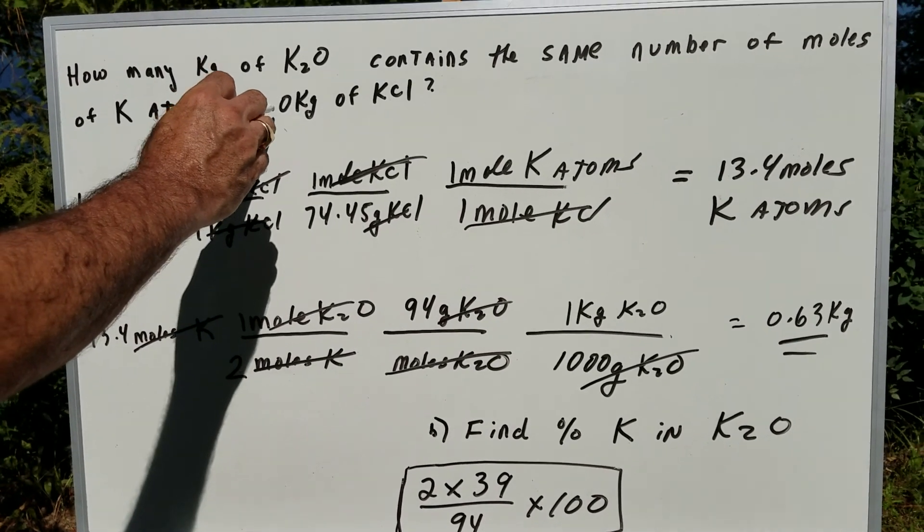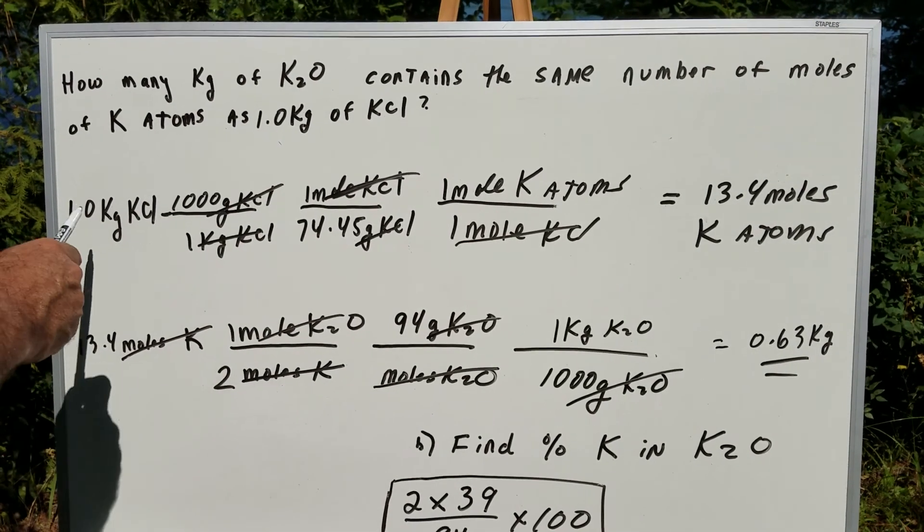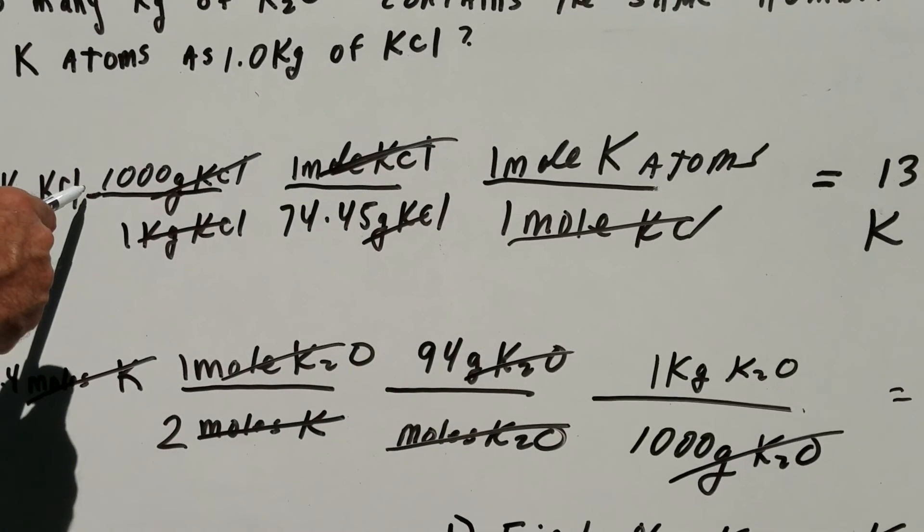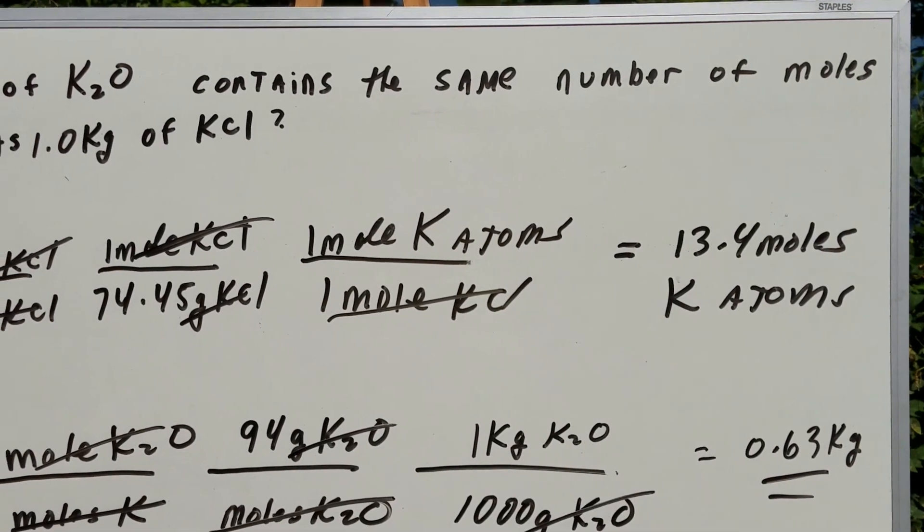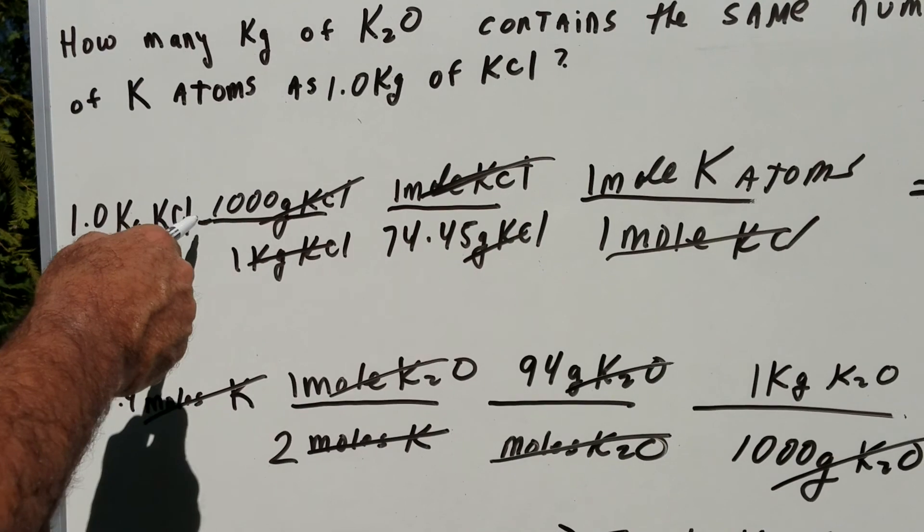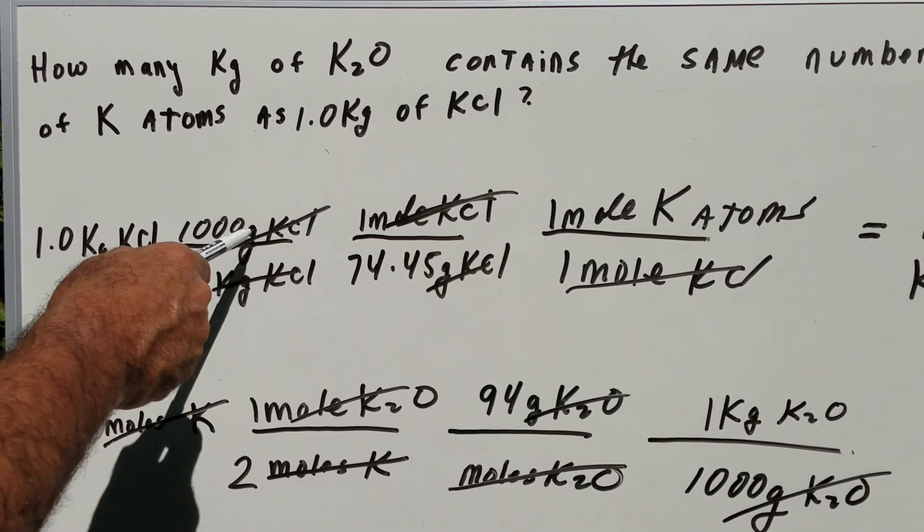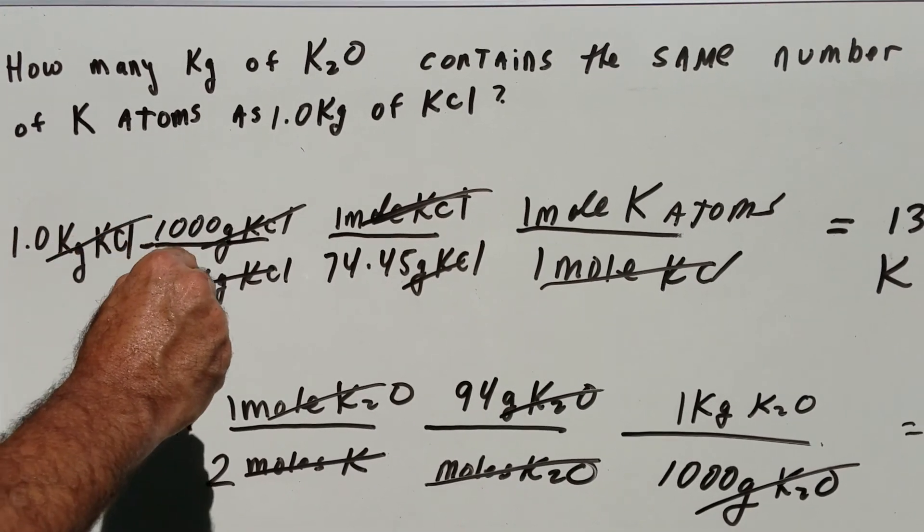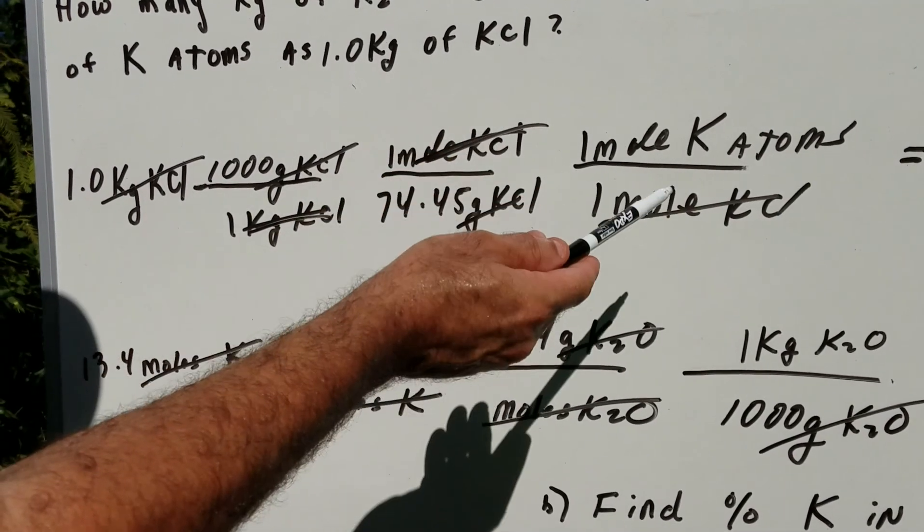Start with the given. They're giving me one kilogram of potassium chloride, so I'm going to write down the given: 1.0 kilograms of KCl. Now they are interested in the number of moles of potassium atoms, which is the moles of potassium. So what I'm going to simply do is take kilograms and convert it into grams. There's a thousand grams in a kilogram and that's going to cross out the kilograms. One mole of KCl